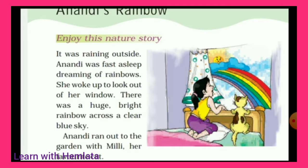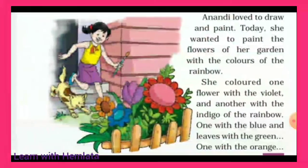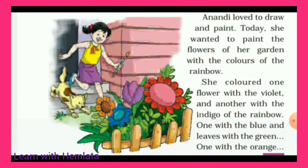Anandi ran out to the garden with Milly, her favorite cat. Anandi bahaat jaldi se Milly ke saath daudi aur daud kar bahar aayi. Milly — her favorite cat's name was Milly. Anandi loved to draw and paint. Anandi ko draw karna aur paint karna bahut acha lagata tha.